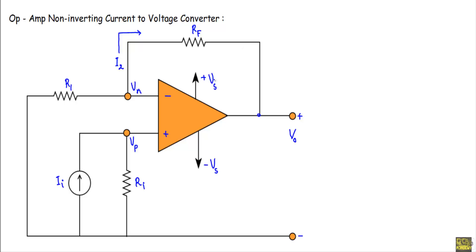This is the circuit structure of the operational amplifier non-inverting current-to-voltage converter circuit. Here the input current is applied at the non-inverting terminal, so this will be the non-inverting circuit. If I can show VO equals K·II, I can say this is the non-inverting current-to-voltage converter circuit. The output terminal is connected to the inverting terminal through RF, so the circuit will be in negative feedback.